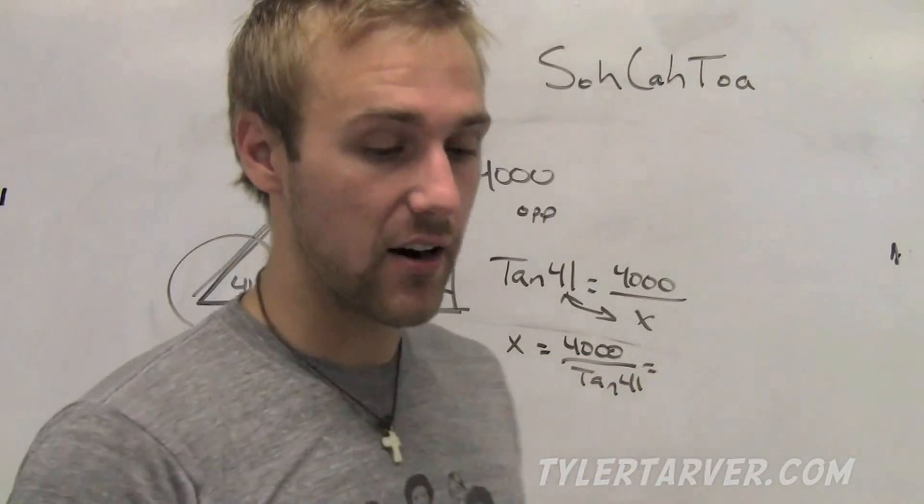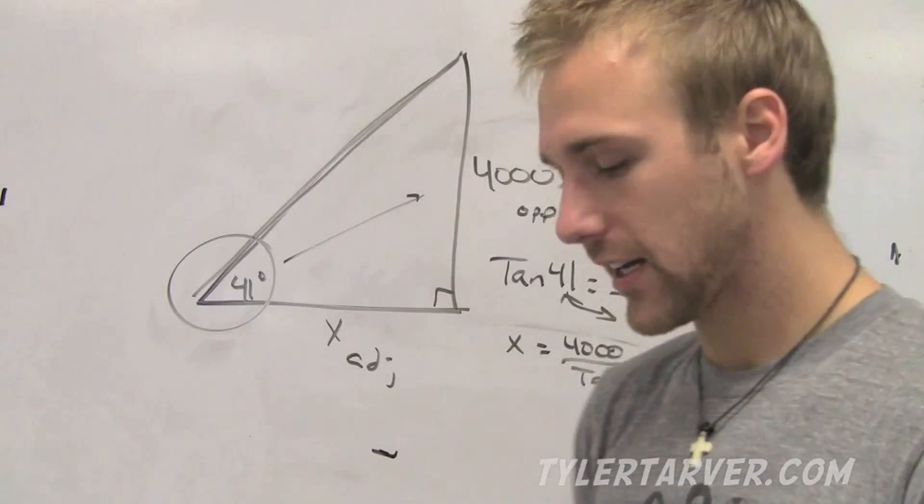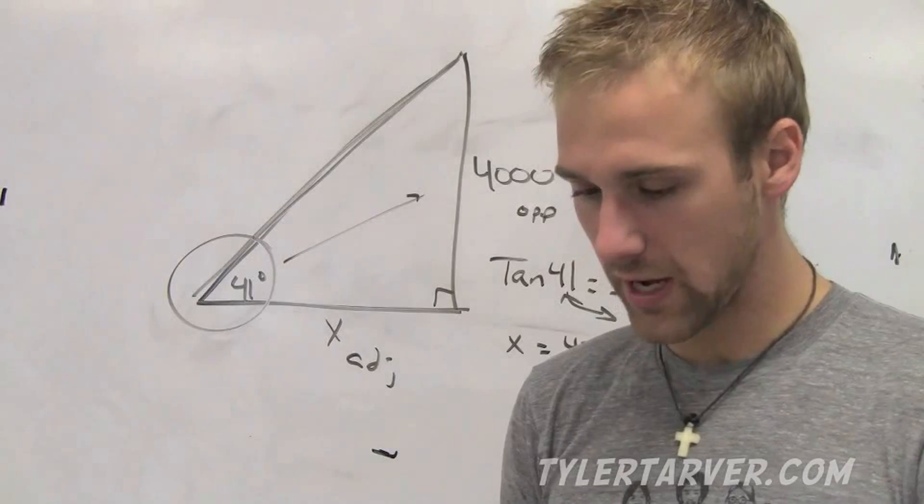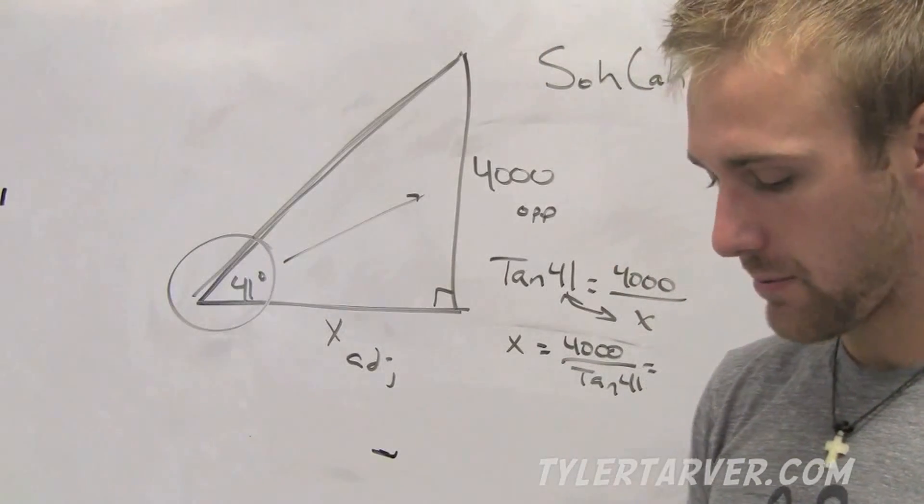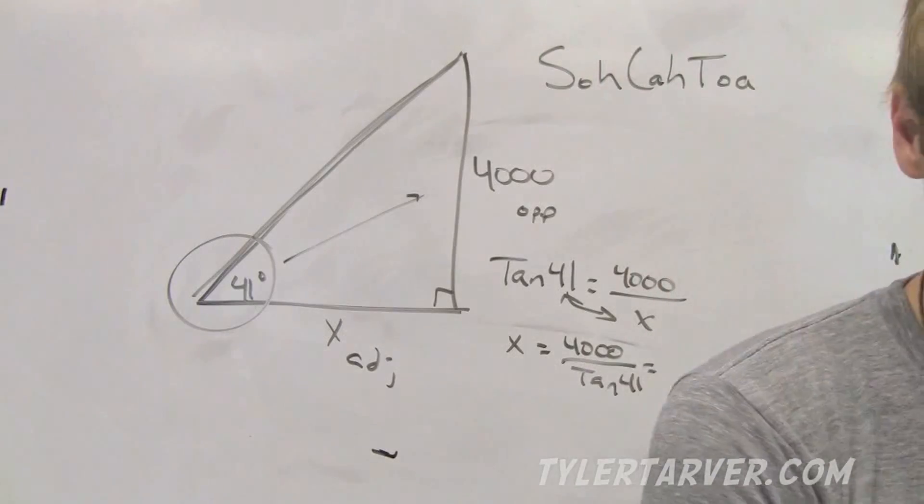And that's going to give us our distance. Now, first thing I'm doing is I'm checking the mode, making sure I'm in degree mode. Check. Now, I'm just going to do 4,000 divided by tangent of 41. And I got my answer.